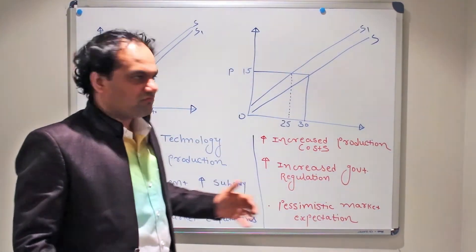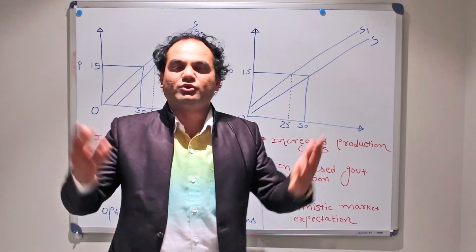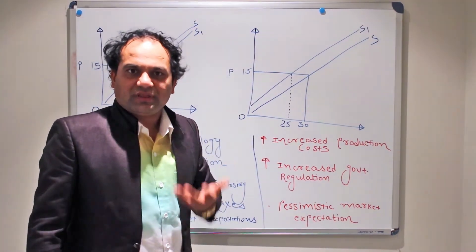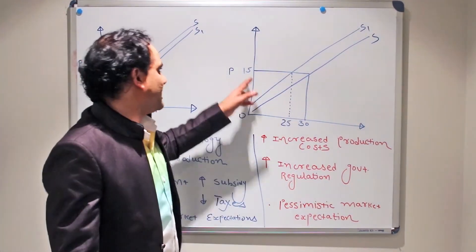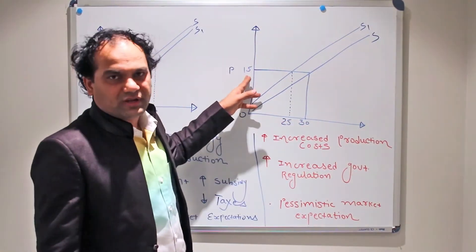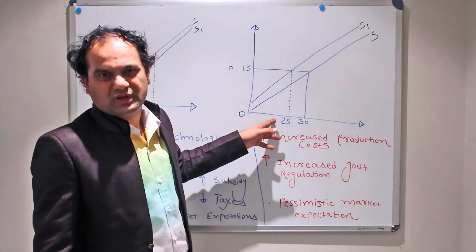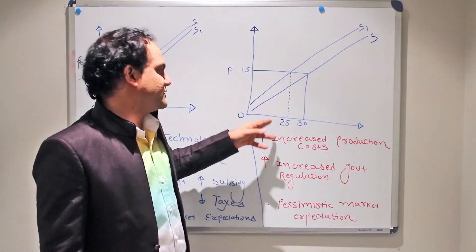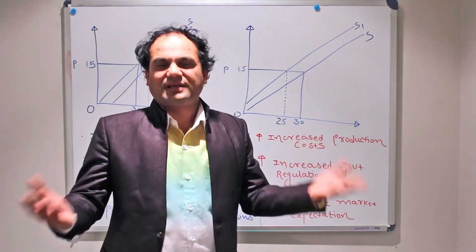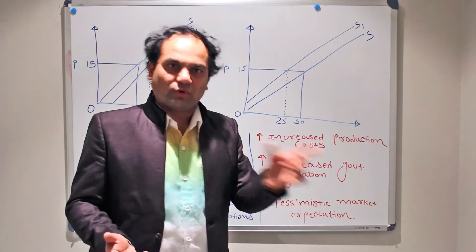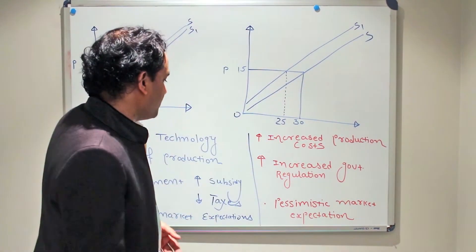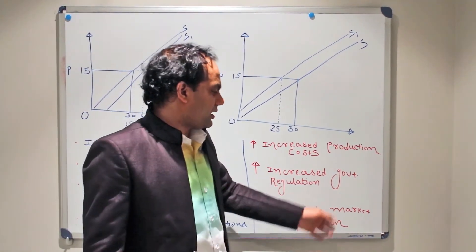Second: increased government regulation. If the government imposes more taxes, it is not a good sign for the industry — they will produce fewer units at the same price. Earlier we used to produce 30 units at a given price of 15, but now we are going to produce only 25 units because the government has increased taxes or decreased the subsidy. Both are unfavorable situations for the industry.